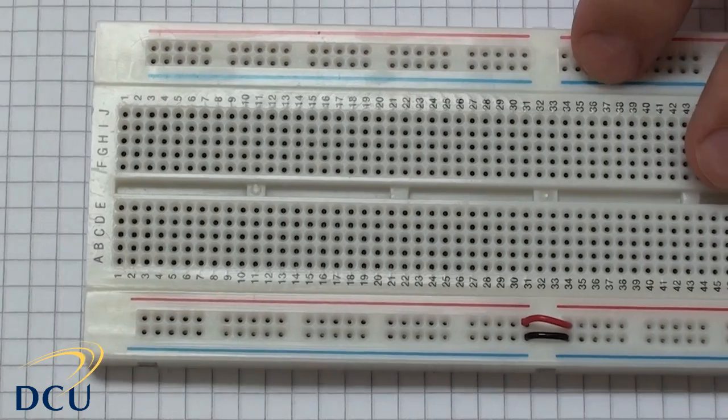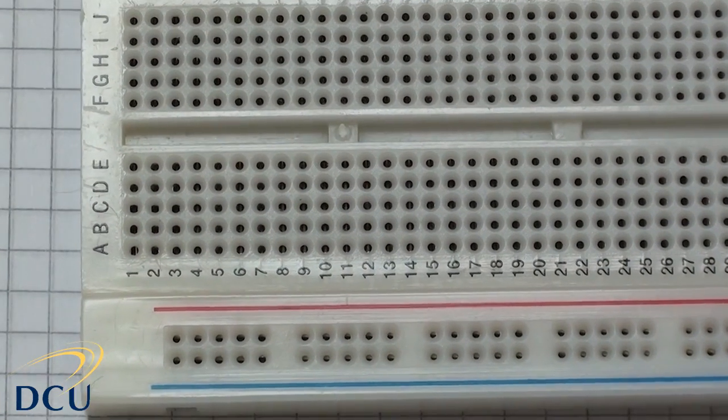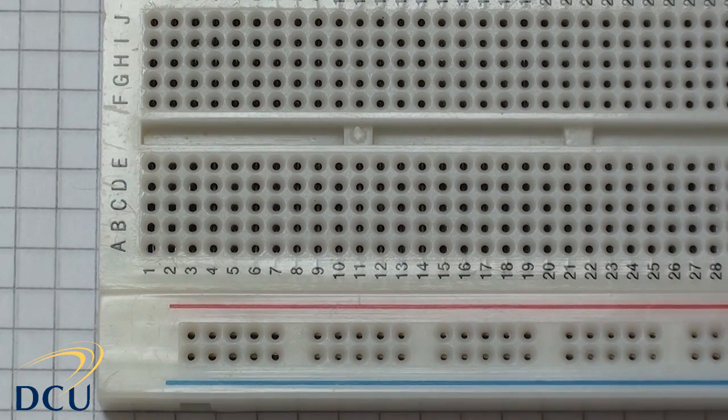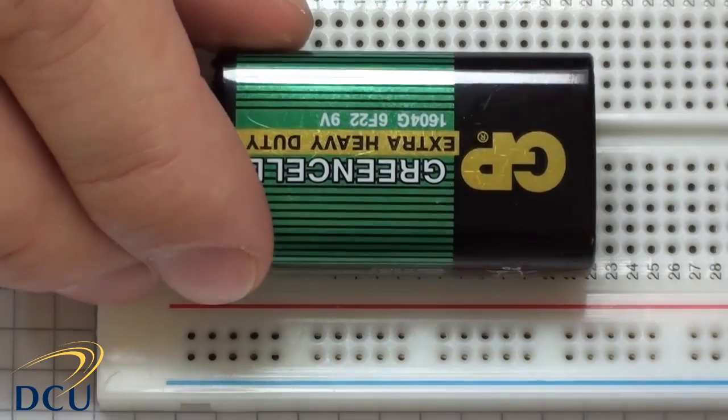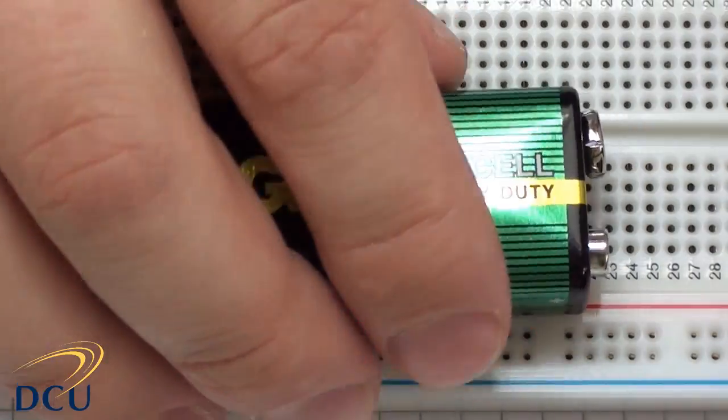Now we want to set up our circuit. So we'll set up our circuit in the corner here, zoom in a little bit. To do this now we're going to use a 9 volt battery - just a normal 9 volt battery, DC supply.